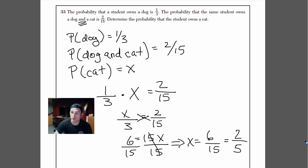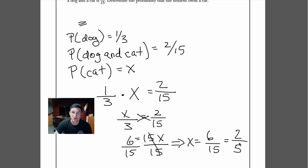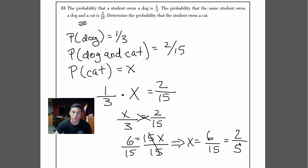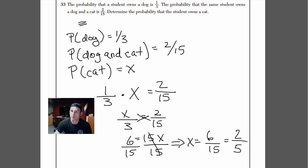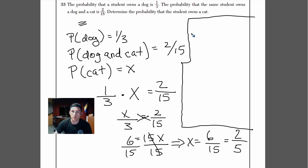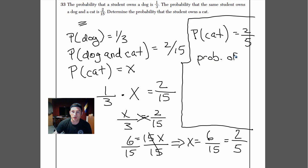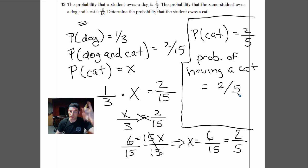So the probability of having a cat equals 2/5. I like boxing the answer out so it's easier for the test grader to see. Write: probability of having a cat equals 2/5. Either way, that's the correct answer. Alright, thanks a lot. Keep watching the videos. I hope you're doing well.